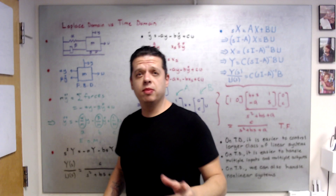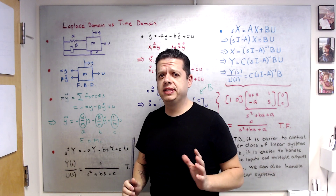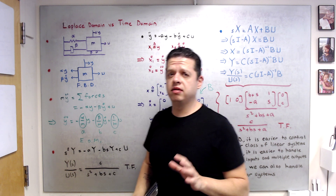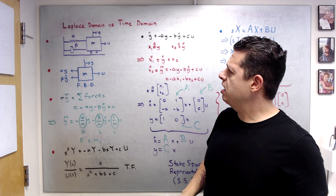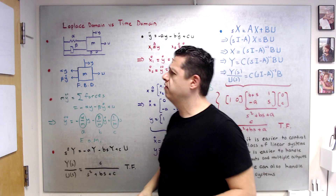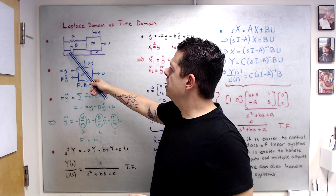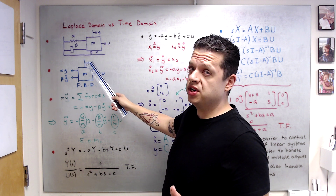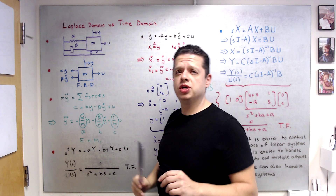Let's have a discussion about Laplace domain control versus time domain control. This video is about modeling. The example we'll use is a spring-mass-damper system — one of the famous examples — with spring constant alpha, damping constant beta, and a mass with no friction. The control signal is in forces and we are measuring output Y, which is the position of the cart.